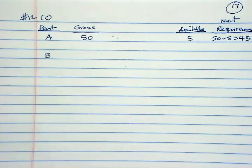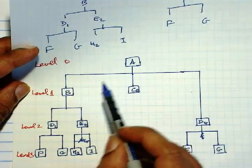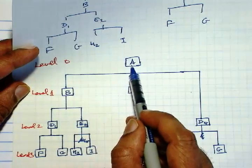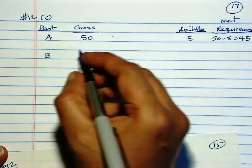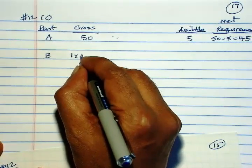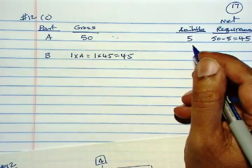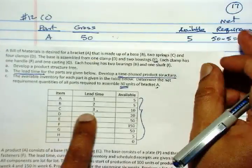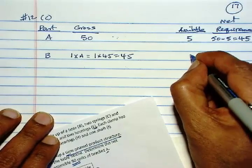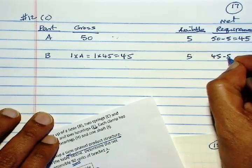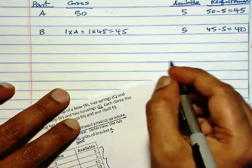Now we need to look at the bill of materials. You need one unit of B for each A. The requirement is 45, so gross requirement here is 1 times A, so that is 1 times 45 is 45. How much is available? B, 5 units are available, so 45 minus 5 is 40, and 40 is the net requirement for B.